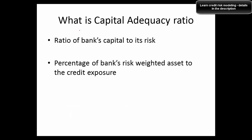What is the capital adequacy ratio? Simply put, it is the ratio of a bank's capital to its risk. More technically, it is the percentage of a bank's risk-weighted assets (RWA) to its credit exposure. That is basically how you calculate the capital adequacy ratio.